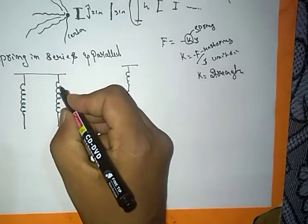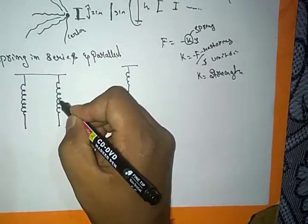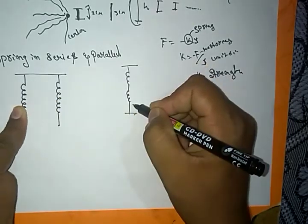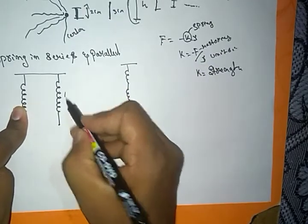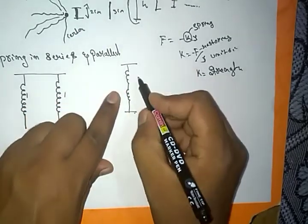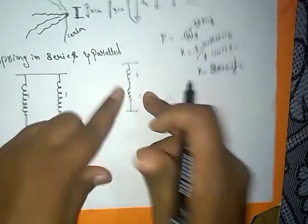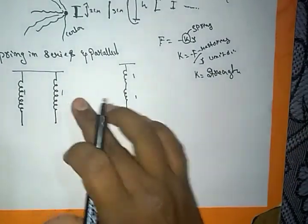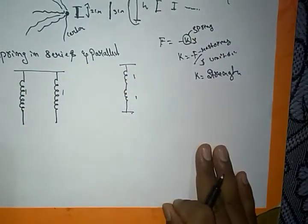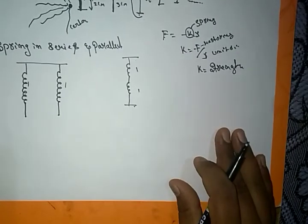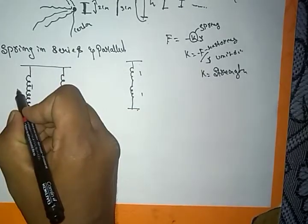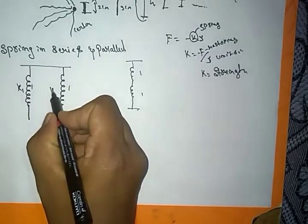If you need two springs joined from one spring constant, you can combine them in series or parallel. We can derive the equation for the effective spring constant for both series and parallel combinations. This is a very simple derivation. First, let us consider the parallel combination.